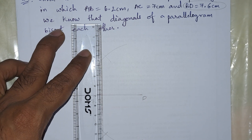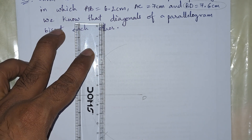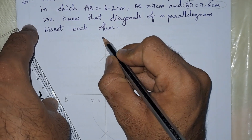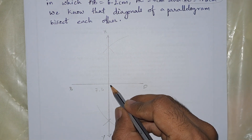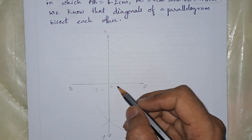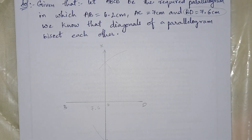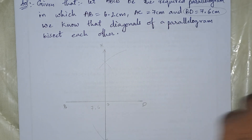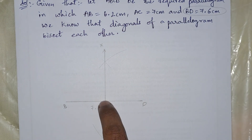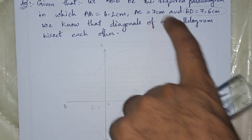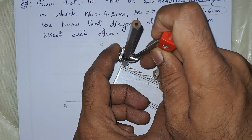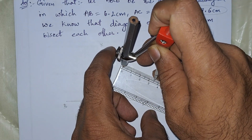Let us join these points, and the meeting point of the perpendicular bisector with BD is taken as O. The other diagonal AC equals 7 centimeters, so it is bisected into two equal parts of 3.5 centimeters each.